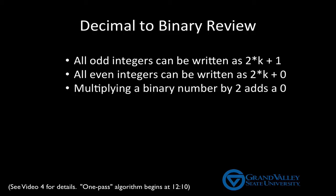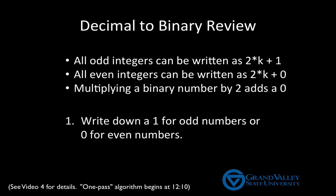We use these three facts to get this algorithm. Take a decimal number and write down a 1 if it's odd or a 0 if it's even. Then, to the left of that, write down the binary for the k.